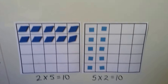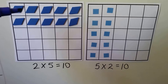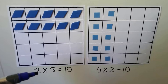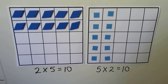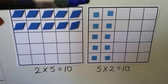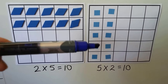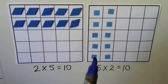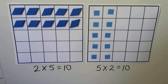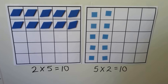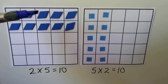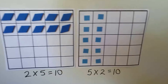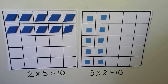Here we have 2 times 5. We have 2 rows and there's 5 in each row. And look at this one — we have 1, 2, 3, 4, 5 rows, but there's only 2 in each row. So we have 5 times 2. They're both 10. It's almost as if we took this one and turned it sideways — we rotated it.